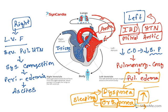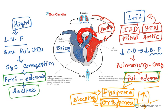So these are the key differences: in right ventricular failure, peripheral edema and ascites occur; in left ventricular failure, pulmonary edema, dyspnea, and orthopnea occur.